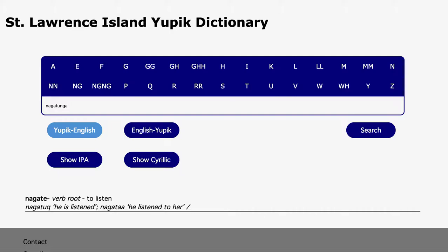The search interface includes integration with our Yupik morphological analyzer. This means that a user can search for a fully inflected Yupik word form, and the underlying root word will be returned.